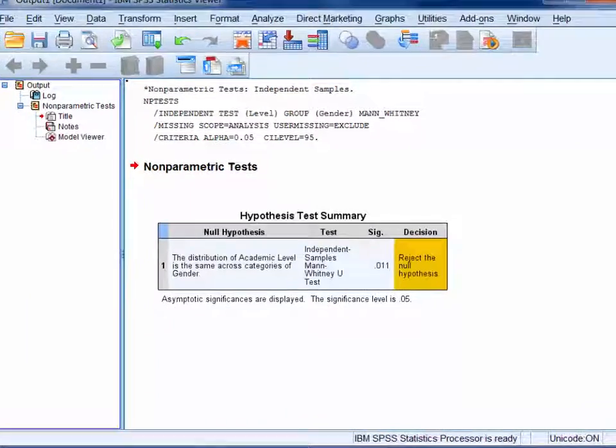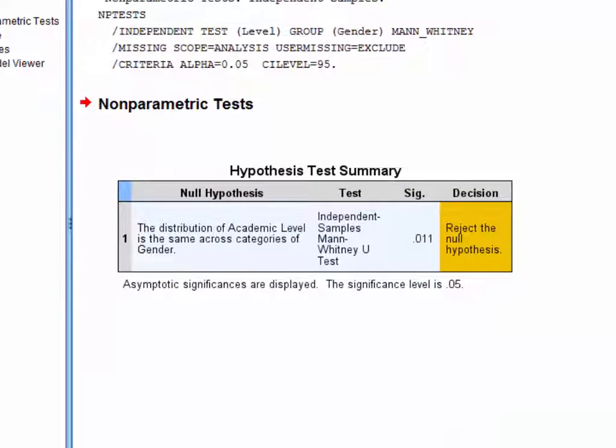Before that though, let's work through this hypothesis test summary table. So here we can see that an independent samples Mann-Whitney U test was run, and the null hypothesis for this test was that the distribution of academic level is the same across categories of gender.